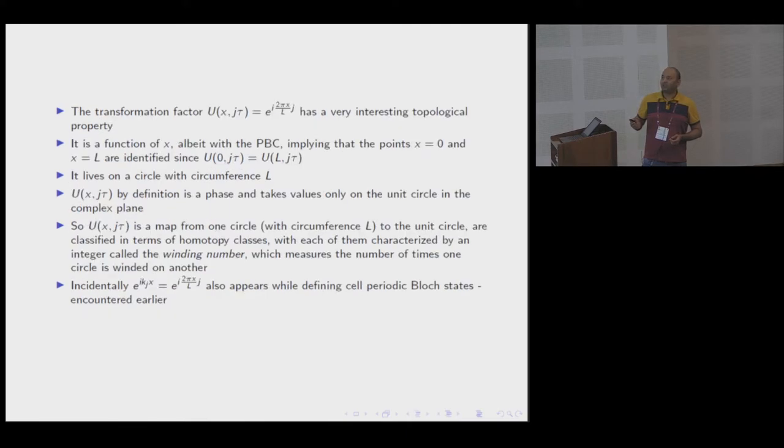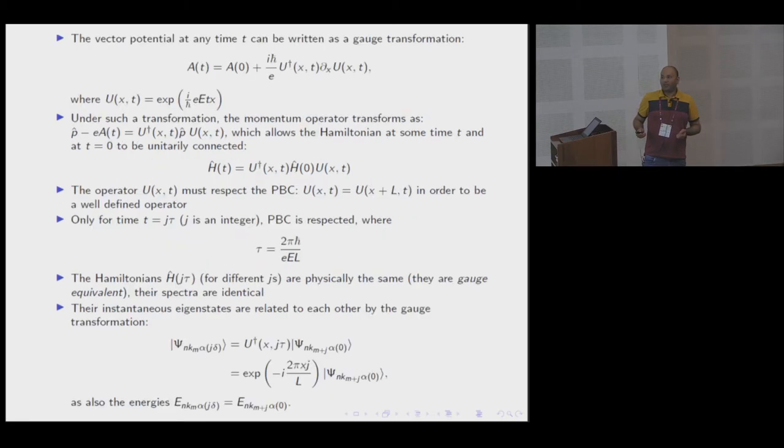This object has an interesting topological property because the problem is defined on a circle. U is a unitary operator. In position-based representation, it's a complex function of x, just a phase which also lives on a circle. This object is a topological object and j is the winding number. It winds one circle of real space onto another circle, the complex plane. j tells you how many times the winding is happening in each direction.